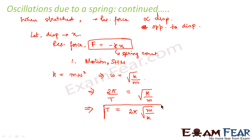So T denotes the time period of the oscillations of a spring. Just as in the case of a simple pendulum we directly use the formula T equals 2π root over l by g, similarly in the case of oscillations of a spring we can directly use the time period formula T equals 2π root over m by k.